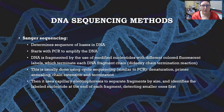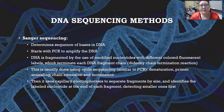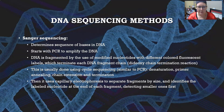Let's look at DNA sequencing methods. The first and original one is Sanger sequencing, which determines the sequence of bases in DNA. It starts with PCR to amplify the DNA, then the DNA is fragmented by the use of modified nucleotides with different colored fluorescent labels. These are terminal nucleotides that terminate each DNA fragment, so this is called a dideoxy chain termination reaction.